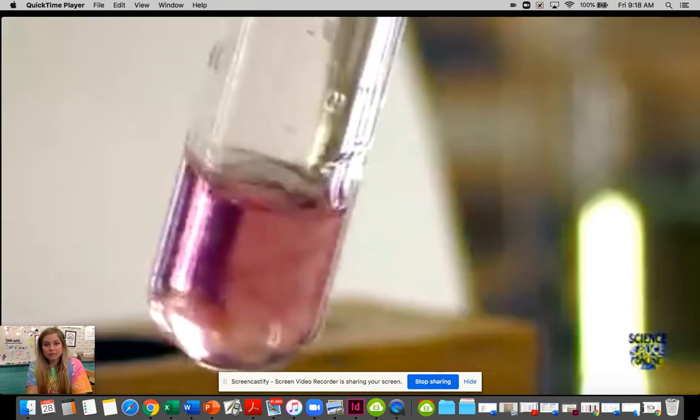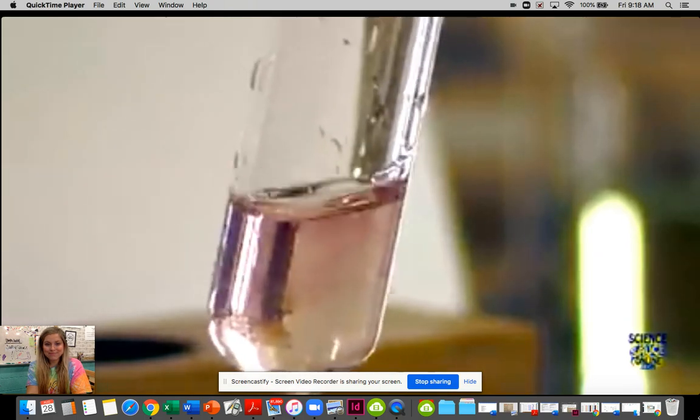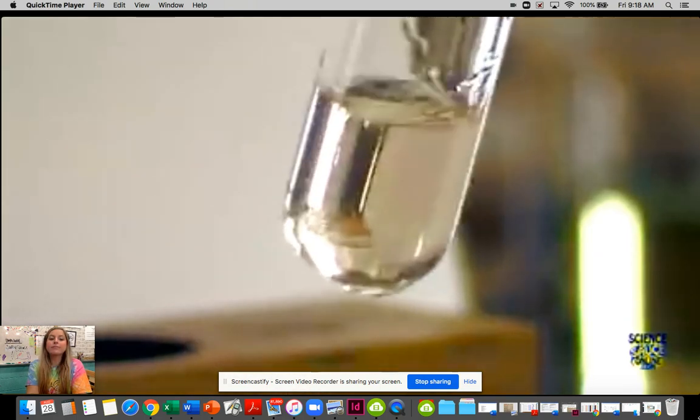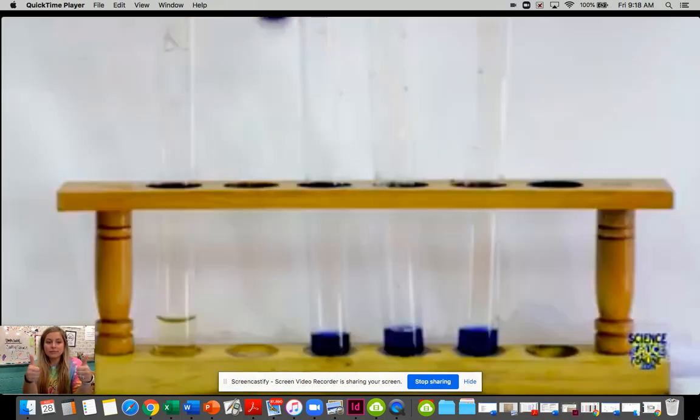If vitamin C is present, you'll notice that your DCPIP turns colorless. Repeat this process for each of your samples.